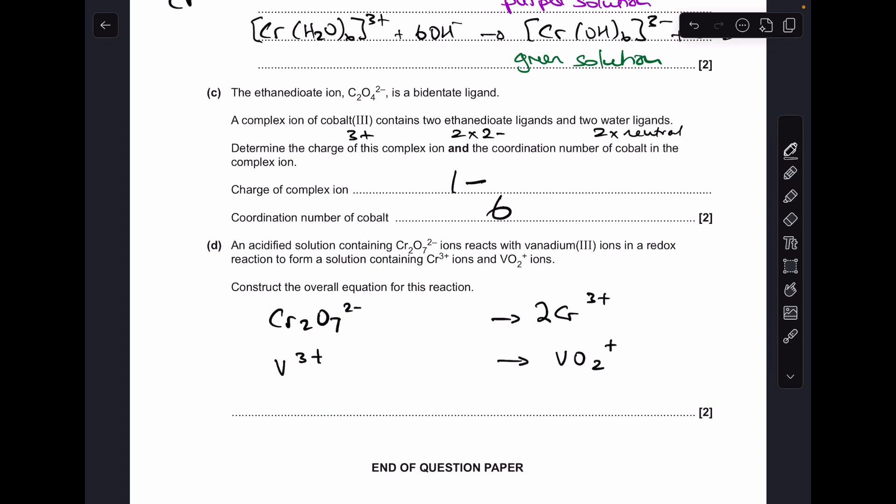Now we'll look at the oxygens. We're only allowed to balance with water, and because this is acidified conditions, H+ ions. I'm going to put the waters in next. I've got seven O's on the left, so I need seven H2O's on the right. That's introduced hydrogen, so I'm going to put 14 moles of H+ on the left. Now I look at the overall charge left and right and balance it with electrons. We've got 2- and 14+, so 12+ on this side. 6+ on this side. So I need to get this side from 12+ down to 6+. So I need six electrons.